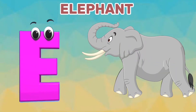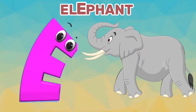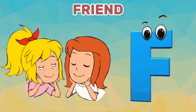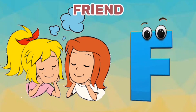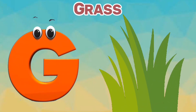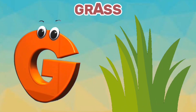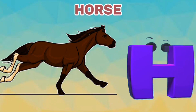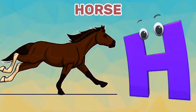E is for Elephant. E, E. Elephant. F is for Friend. F, F. Friend. G is for Grass. G, G. Grass. H is for Horse. H, H. Horse.